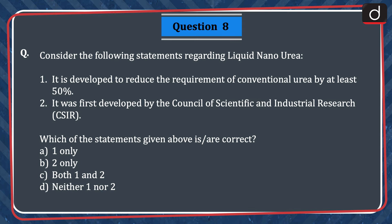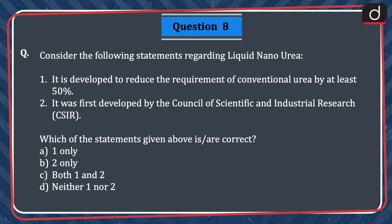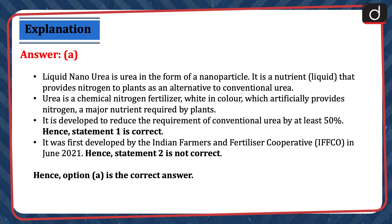Next question: consider the following statements regarding liquid nano-urea. (1) It is developed to reduce the requirement of conventional urea by at least 50%. (2) It was first developed by the Council of Scientific and Industrial Research. Which statements are correct? Options: (A) one only, (B) two only, (C) both one and two, or (D) neither one nor two. The correct answer is option A — one only. Liquid nano-urea is urea in the form of nanoparticles; it is a nutrient liquid that provides nitrogen to plants as an alternative to conventional urea. Urea is a chemical nitrogen fertilizer, white in color, which artificially provides nitrogen, a major nutrient required by plants. It is developed to reduce the requirement of conventional urea by at least 50% — hence statement one is correct. It was first developed by the Indian Farmers and Fertilizer Cooperative (IFFCO) in June 2021 — hence statement two is not correct. Therefore, option A is the correct answer.